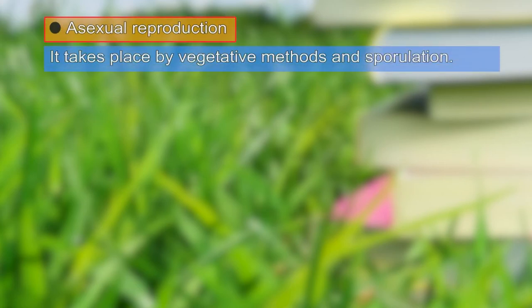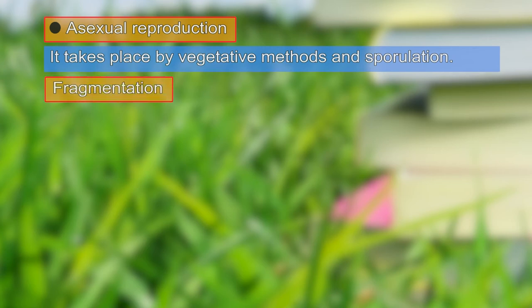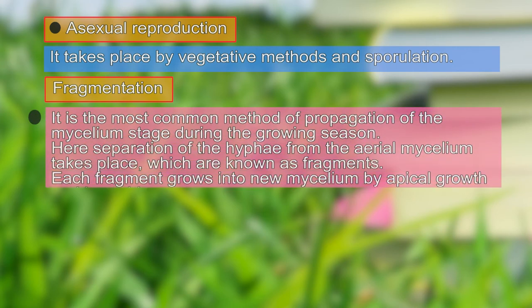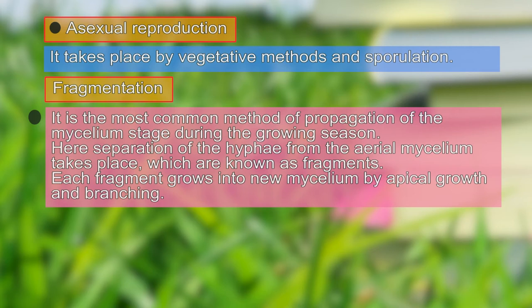Coming on to the reproductive phase — Rhizopus reproduces by both asexual and sexual methods. In the asexual mode, it reproduces by vegetative methods or by sporulation. The vegetative method includes fragmentation, where aerial mycelium is accidentally cut off from a tuft of hyphae and, upon getting a suitable substrate, starts growing and matures into a new mycelium due to apical growth.